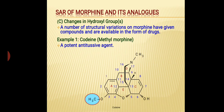The third part is changes in hydroxyl groups. A number of structural changes on morphine have given compounds available as drugs in this category. The first example is codeine, a derivative of morphine, also known as methyl morphine. It is a potent antitussive agent. In morphine, an OH group is present at the third position, but in codeine a methoxy group is present — that is, the hydrogen is removed and a methyl group is attached, giving codeine its potent antitussive activity.